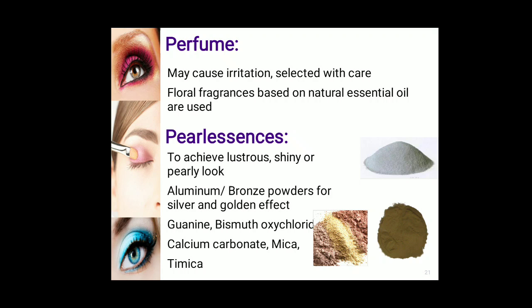Perfumes can be used but may cause irritation in sensitive areas near the eyes; that is why most perfume-based products carry a label stating not to be applied near the eyes. Certain pearlescent or glittering agents can be used to give a glow effect to the eyes, increasing their attractiveness for a lustrous, shiny, or pearly look. Aluminum, bronze, silver, or gold powders can be used for attractive effects. Guanine, bismuth oxychloride, calcium carbonate, mica, and titanium mica can be used to give a lustrous or shiny effect.